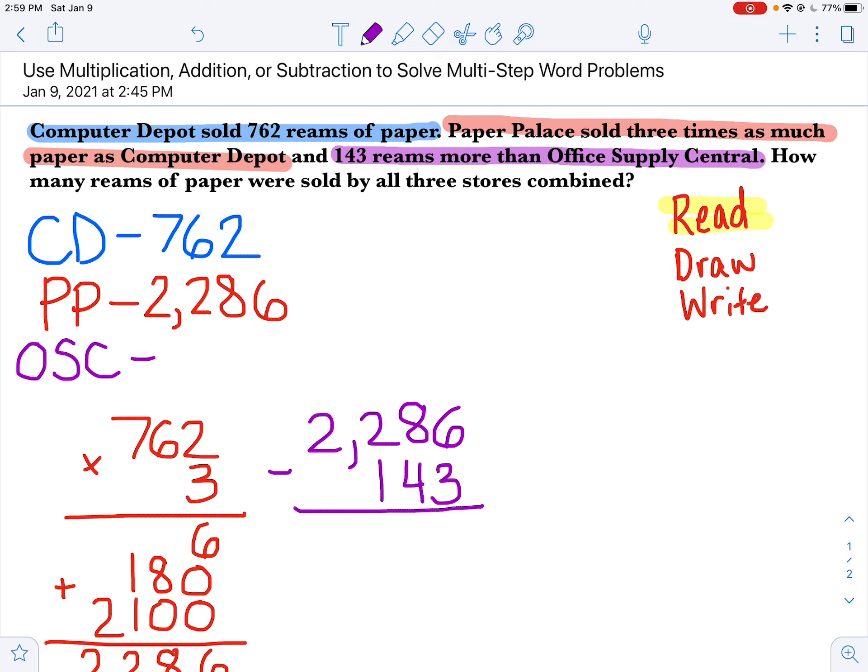Okay, straight subtraction problem here using our algorithm. 6 minus 3 is 3, 8 minus 4 is 4, 2 minus 1 is 1, and then we have our 2,000 left. So now I know how much Office Supply Central sold. Look at how I'm keeping everything organized. Now I have all three stores' totals of reams of paper.